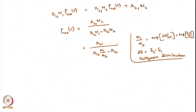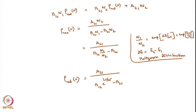When I plug in the Boltzmann relation, rho(nu) becomes A21 divided by [B12 exp(h-nu / kT) − B21].